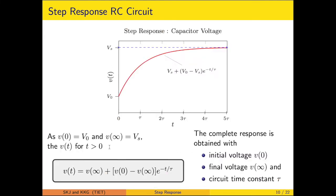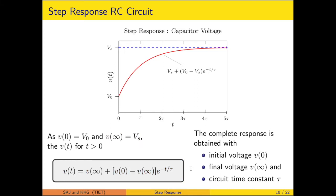To generalize, V₀ is the initial voltage and Vs is now denoted as V(∞), the final voltage. The complete response is then expressed in terms of the final value and the initial value. To define the complete response, we need three parameters: the initial voltage value, the final voltage value, and the time constant. The time constant depends on the resistance and capacitance, which are physical circuit parameters.